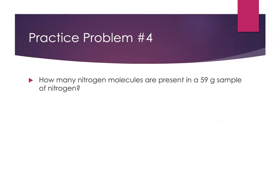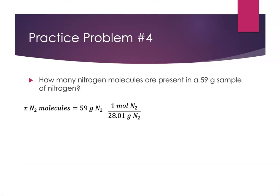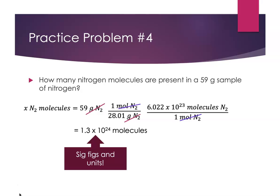One more practice problem — try it on your own first. How many nitrogen molecules are present in a 59 gram sample of nitrogen? x N₂ molecules equals 59 grams of N₂. Remember, nitrogen is a diatomic molecule — a common student mistake is to forget that — so the molar mass is 28.01 grams per mole. Multiply by 1 over the molar mass to get moles, then multiply by Avogadro's number to get molecules. Since 59 grams is more than 28 grams, I have more than a mole, and I expect more than Avogadro's number. Grams of nitrogen cancel, moles of nitrogen cancel, leaving molecules. Final answer: 1.3 times 10 to the 24th molecules of nitrogen — correct sig figs and units.